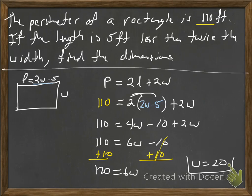Okay. Then the length will be 2 times 20, which is 40, minus 5 is 35.